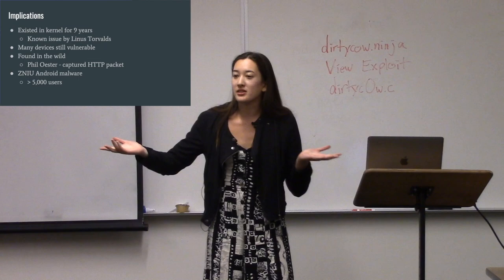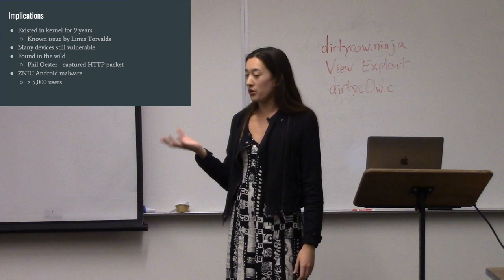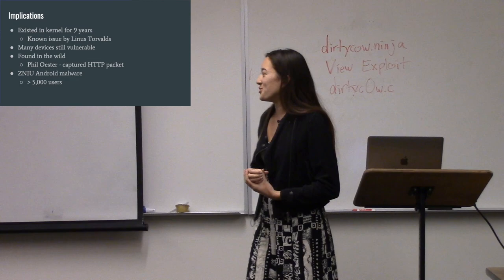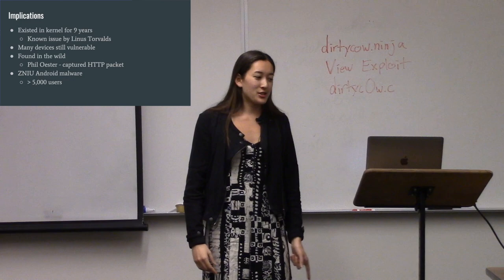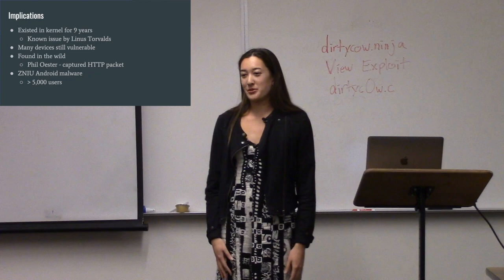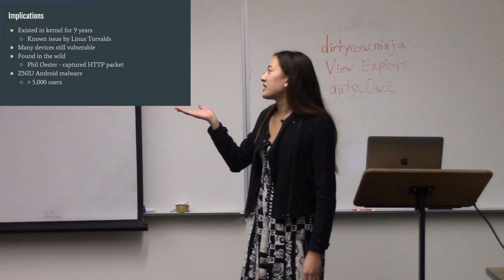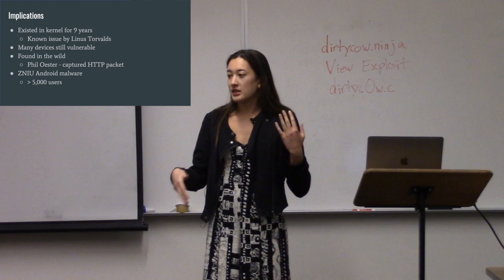What are the implications? This vulnerability existed in the Linux kernel for nine years — a long time for a vulnerability to go unnoticed. Interestingly, it was actually a known issue. Linus Torvalds found it nine years ago when it first got introduced and tried to patch it, but decided it was too much work and probably wouldn't be a big deal or get exploited. Now he's admitted he was wrong. Originally it wasn't an actually exploitable vulnerability, but over time as systems got more efficient, the race condition became viable — before it was just a theoretical attack.